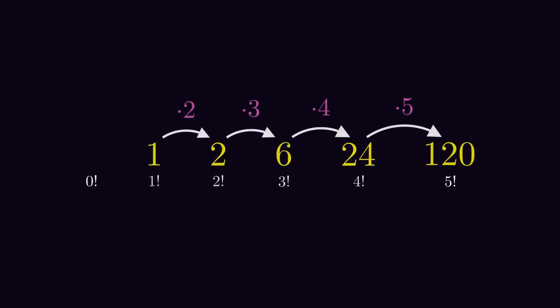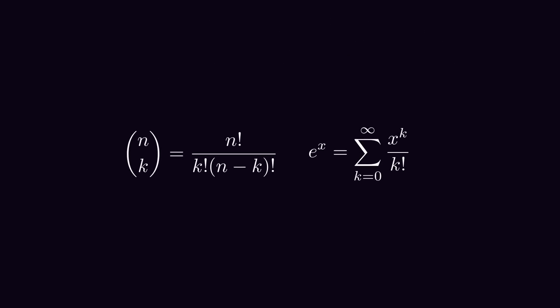But what if we go to the left instead? 0 factorial times 1 will be 1 factorial, which is 1. So 0 factorial should be 1. And, in fact, this is a widely used definition and makes a lot of formulas much easier.